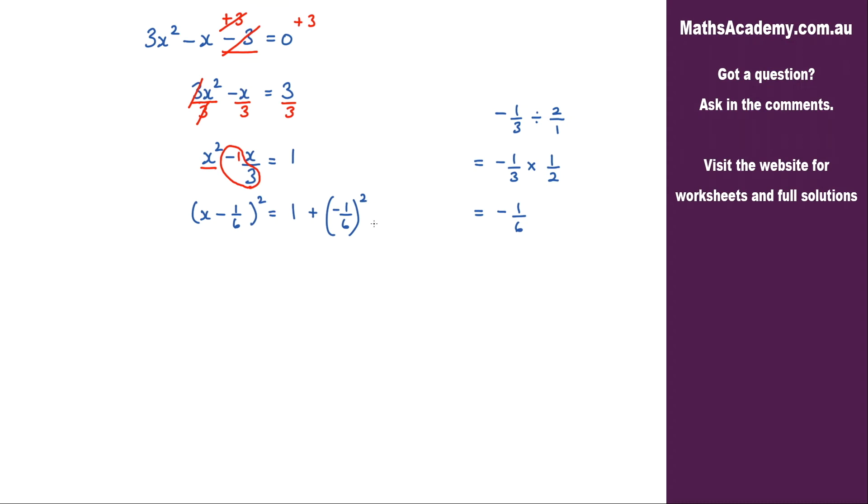Now let's go ahead and tidy this right hand side up here. So on the left we have x minus 1 over 6 and that is squared.